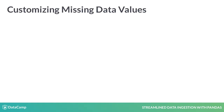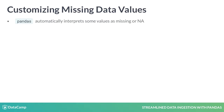Missing data is another common issue. Pandas automatically recognizes some values, like NA or NULL, as missing data, enabling the use of handy data cleaning functions. But sometimes missing values are represented in ways that Pandas won't catch, such as with dummy codes.